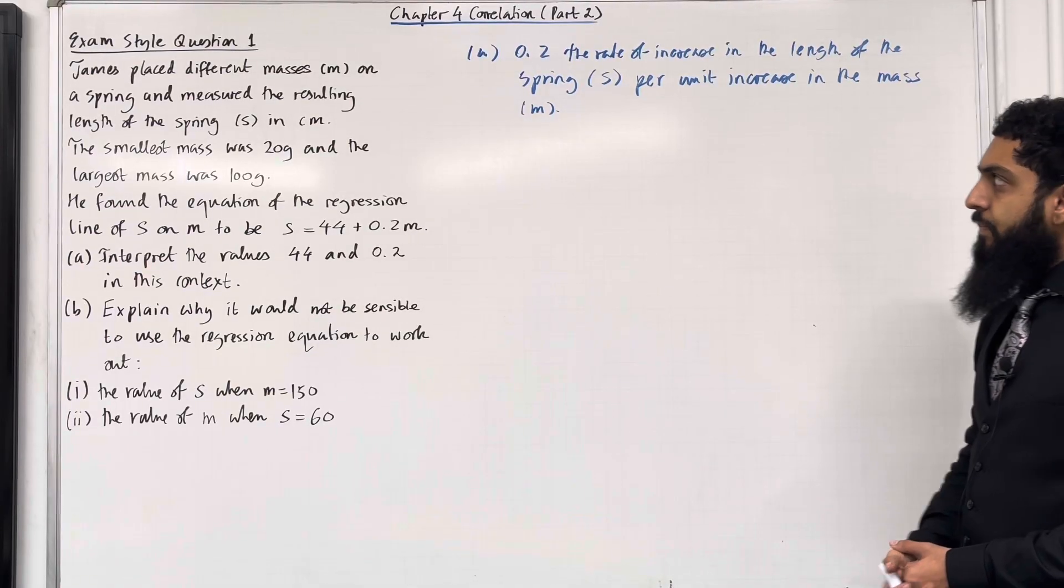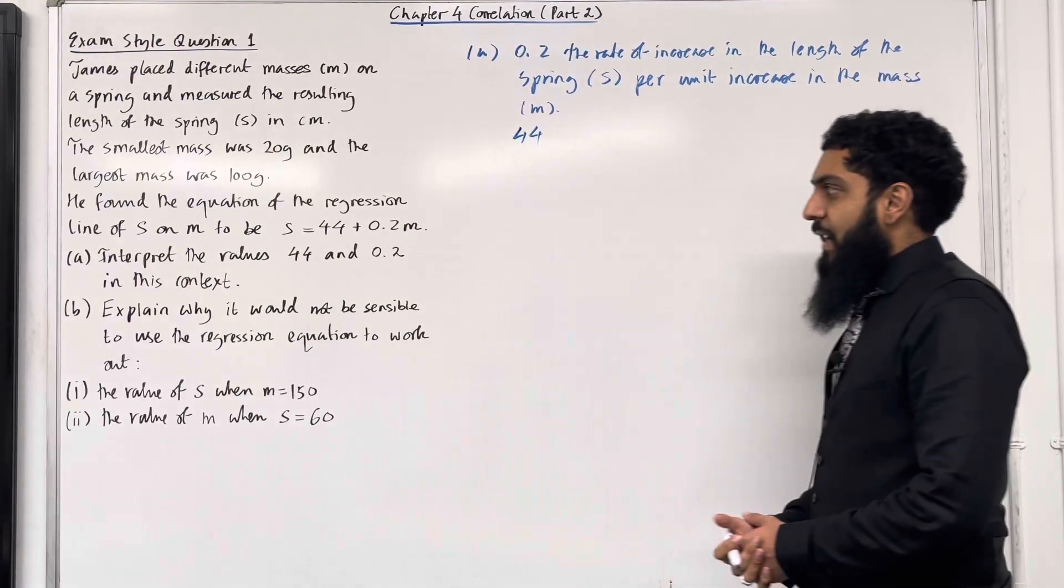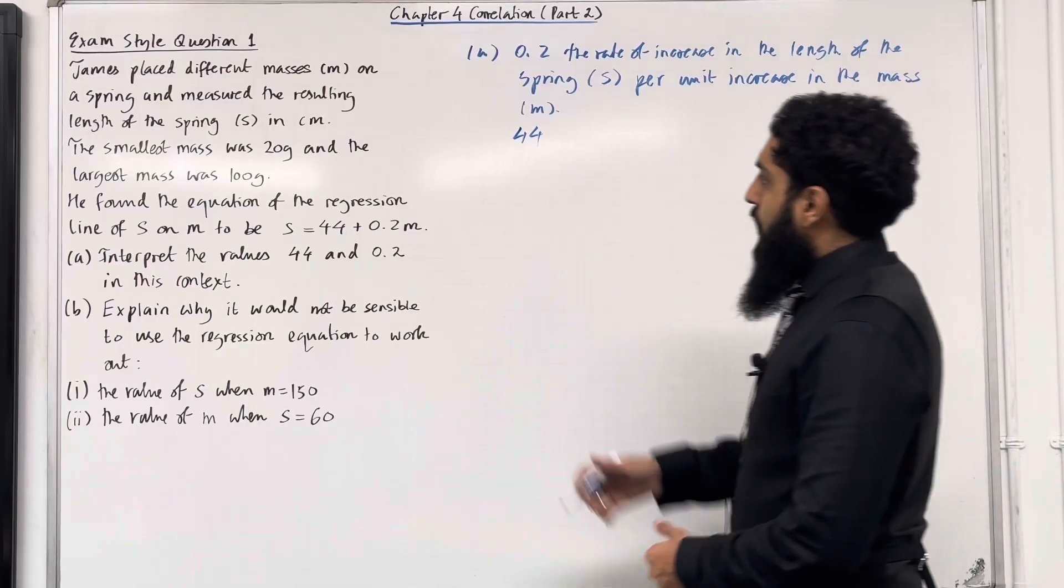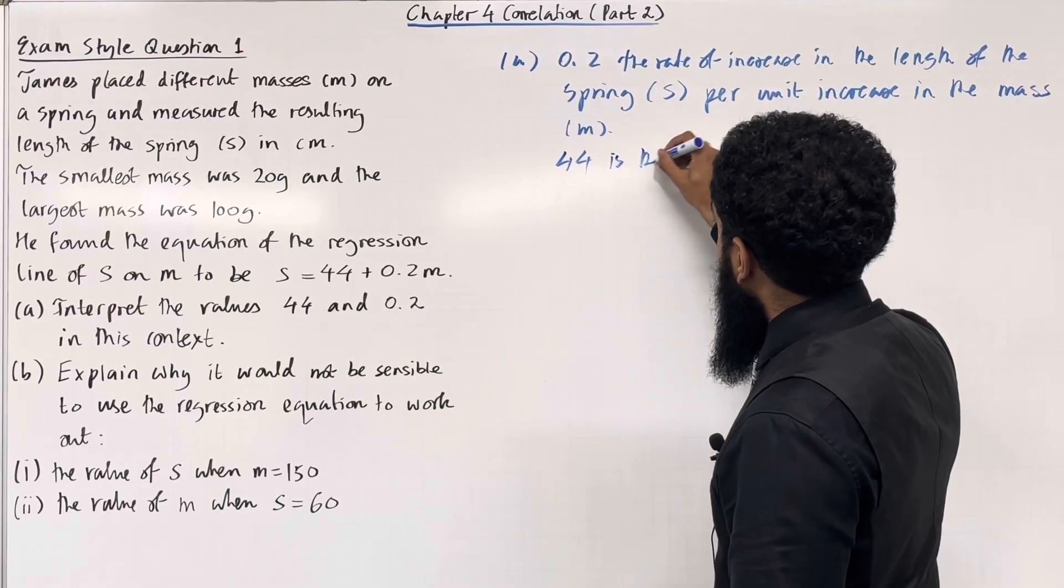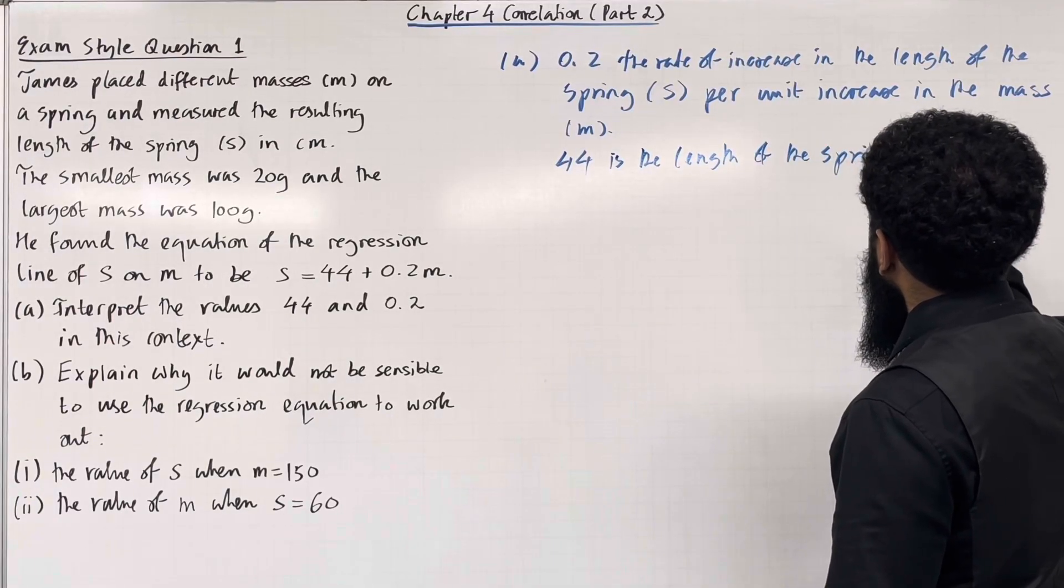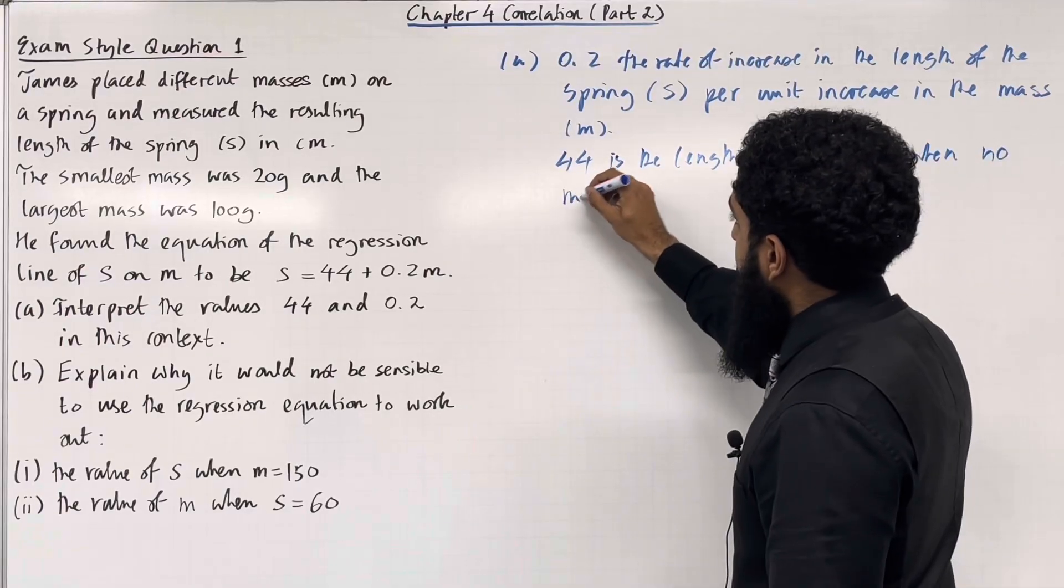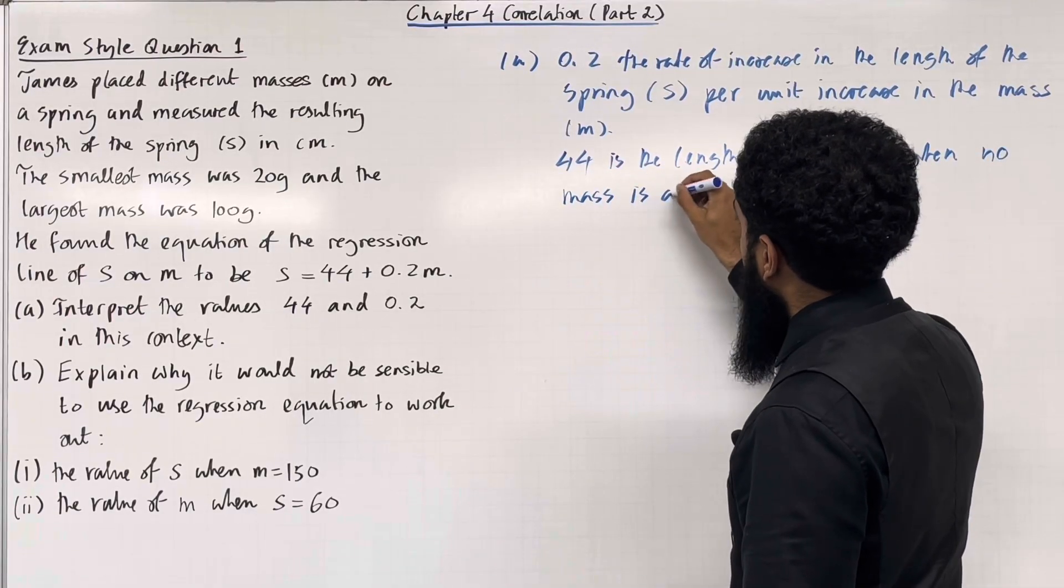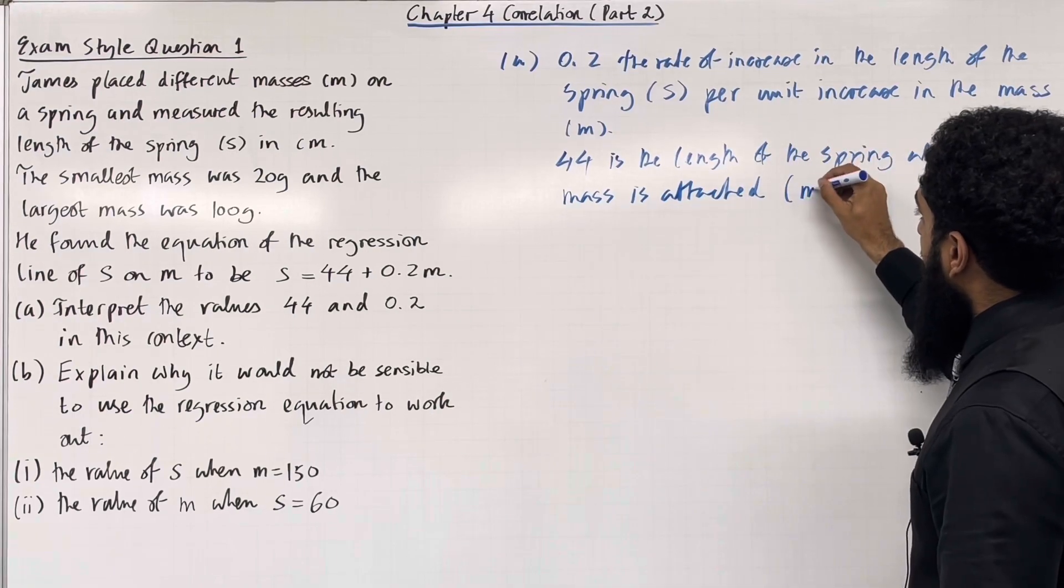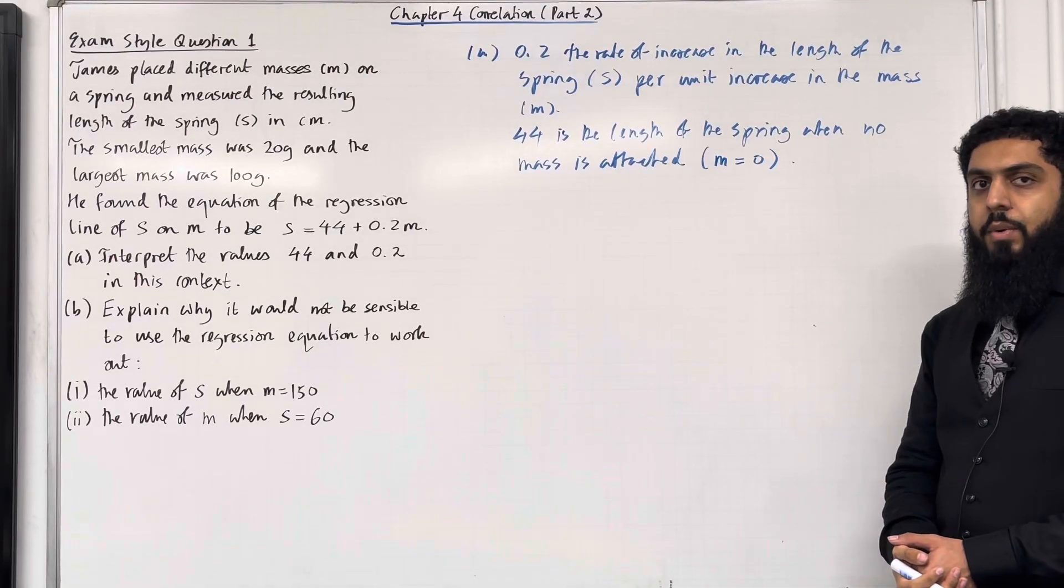Let's have a look at 44. So 44 is our s-intercept. We need to give the interpretation in context. 44 is the length of the spring when no mass is attached, that is when m = 0. This completes part A of the question.